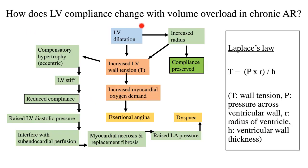How does LV compliance change with volume overload in chronic AR? Based on Laplace's law, wall tension equals pressure across the ventricular wall times the radius, divided by the wall thickness. In early chronic AR, the LV dilates in response to volume overload, so its radius increases — this means the LV is still compliant and not stiff. However, increasing radius leads to increasing wall tension, which increases myocardial oxygen demand, leading to exertional angina even with normal coronaries.